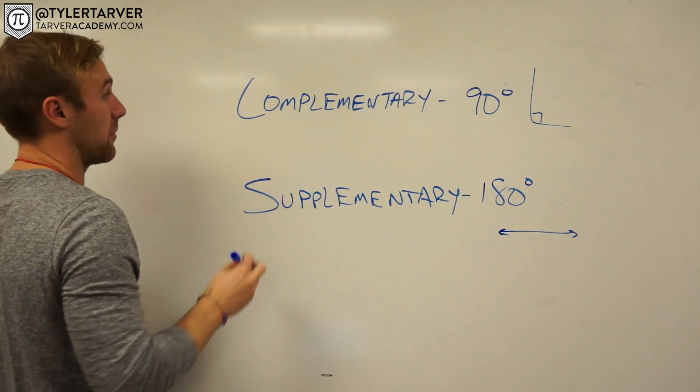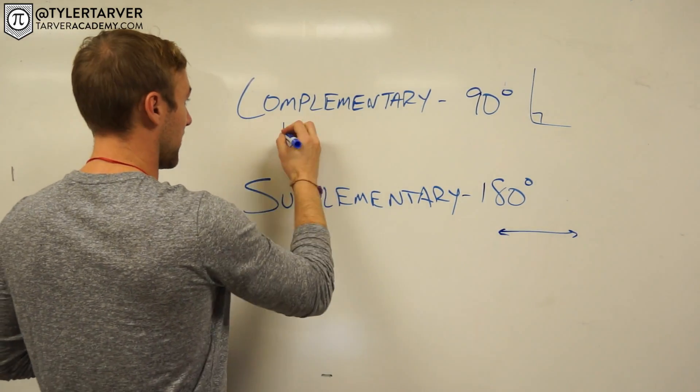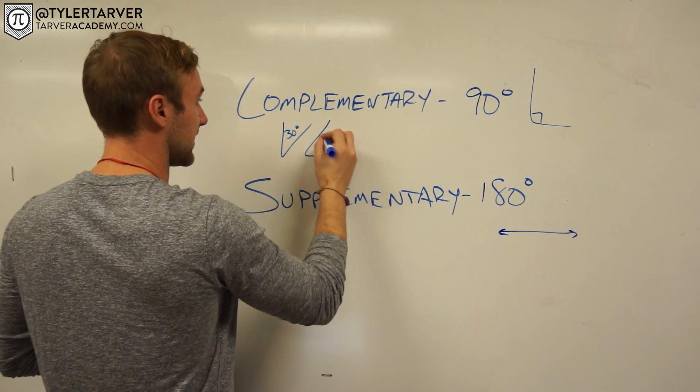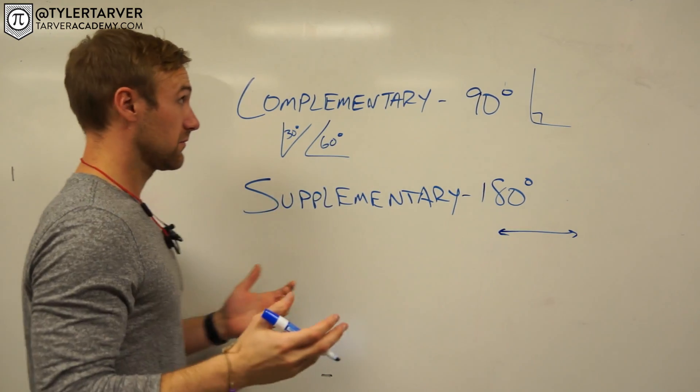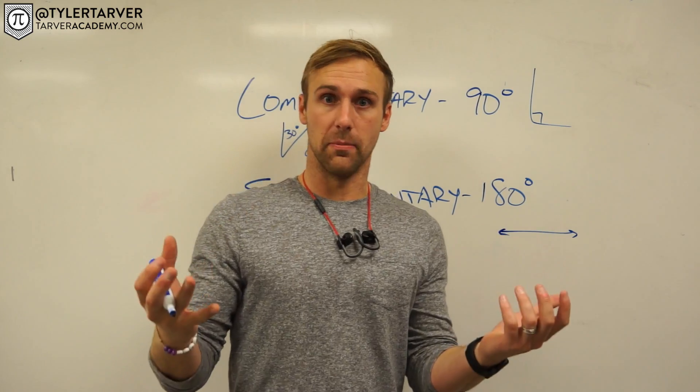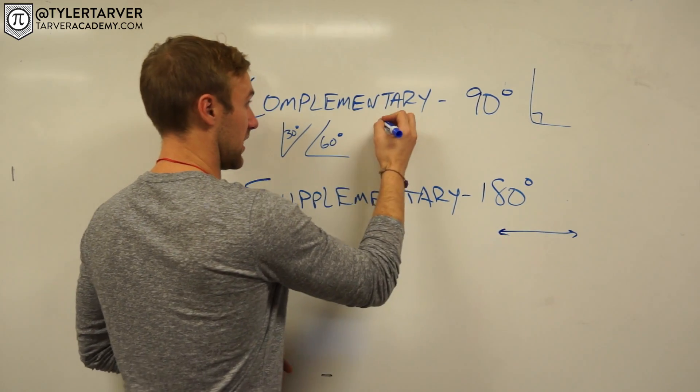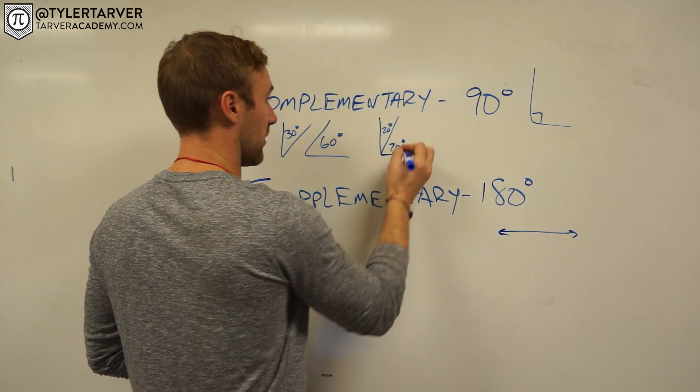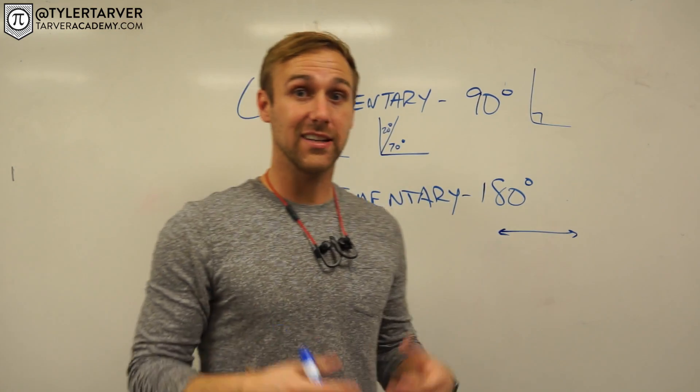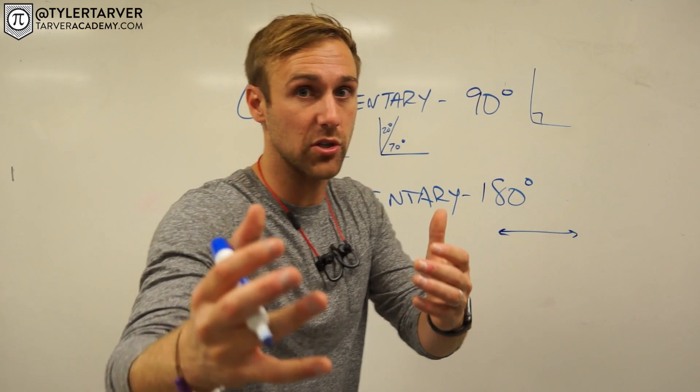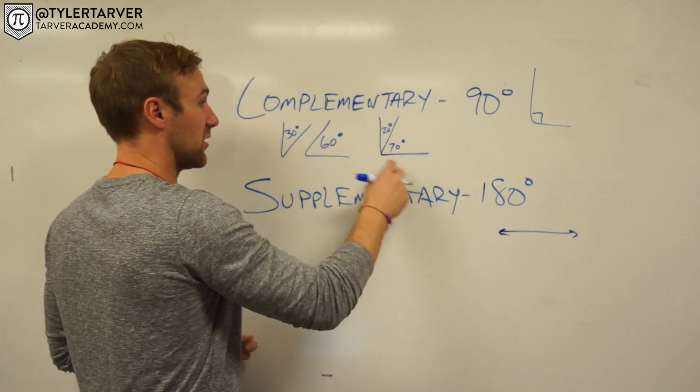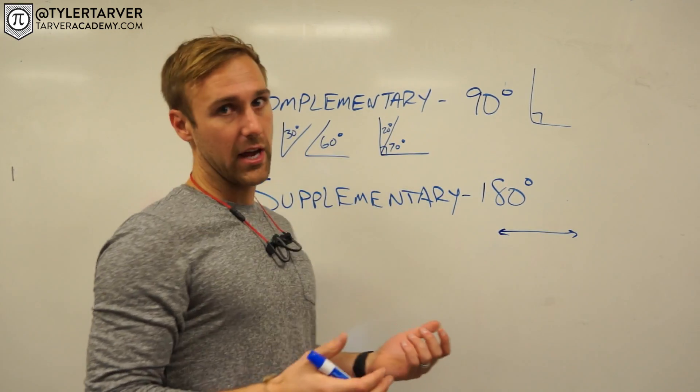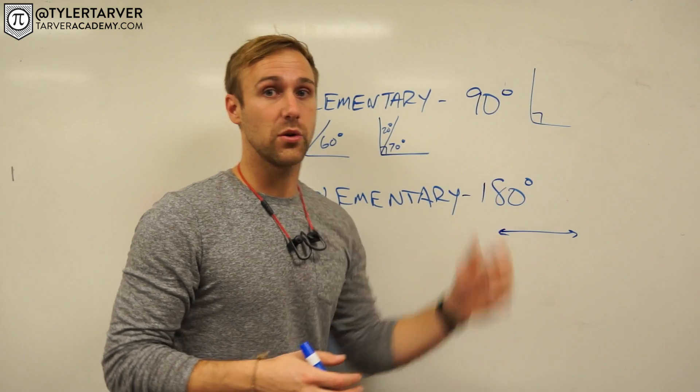Whenever, let's say you got complementary, that would be like a 30 degree angle and a 60 degree angle. Those two angles are complementary. Let's say you've got a 20 degree angle and a 70 degree angle. 20 plus 70 is 90. Therefore, those angles are complementary. And they also, when put together, make a right angle, because a right angle is 90 degrees.